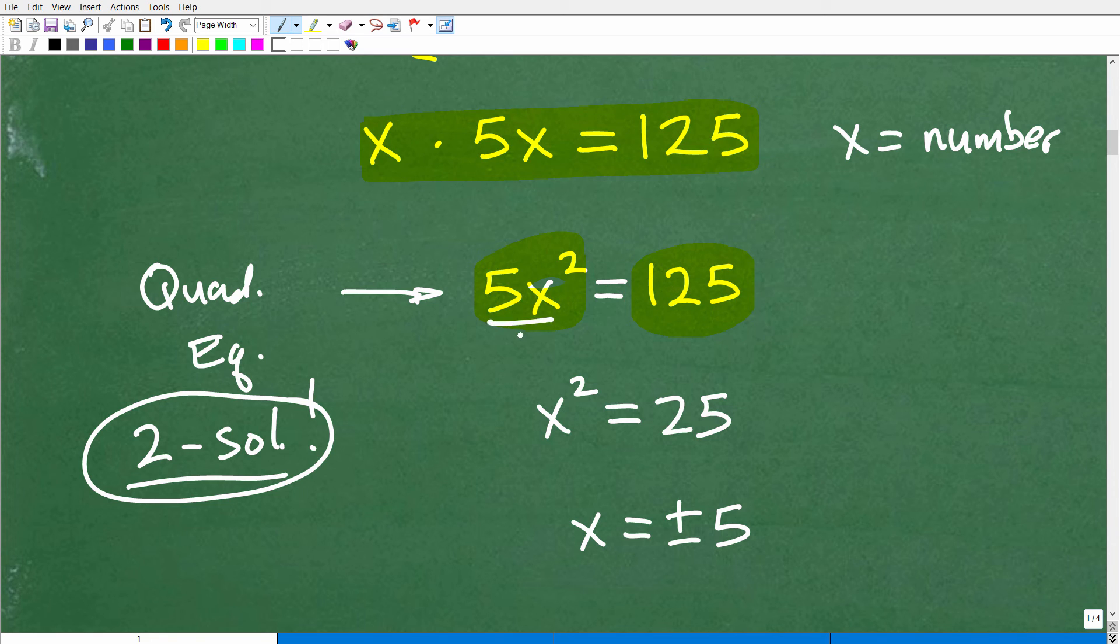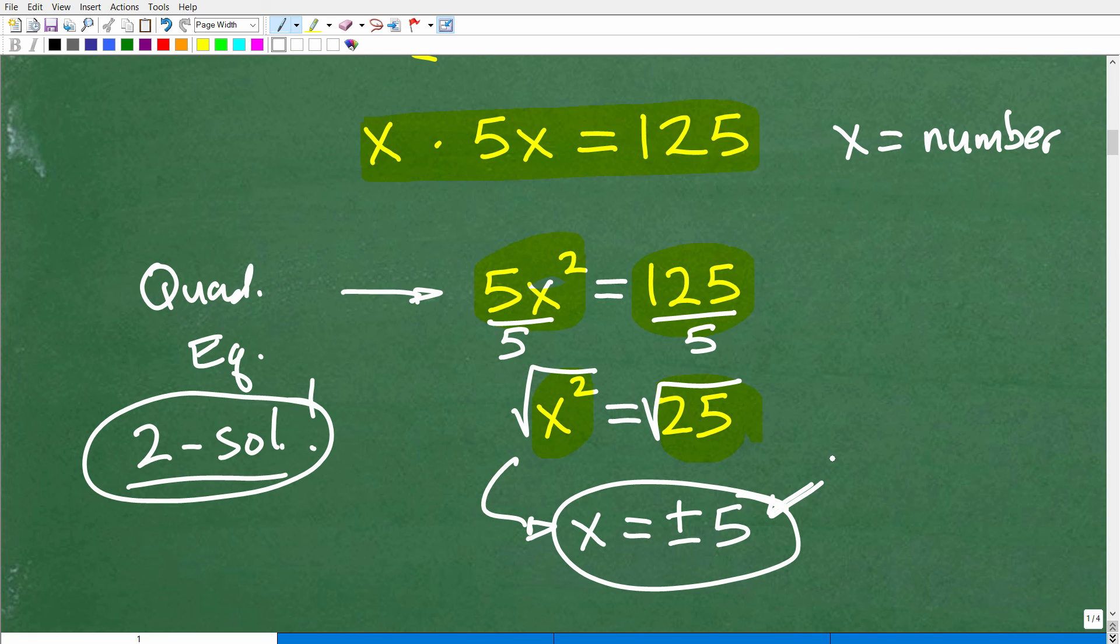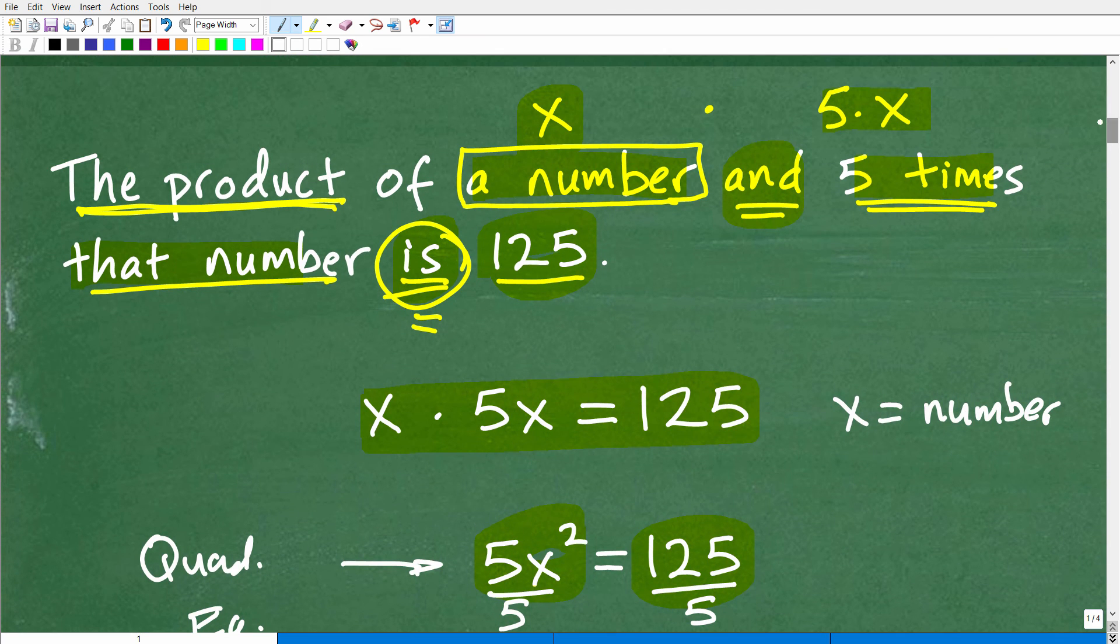So how do I solve this particular quadratic equation? Well, the easiest thing to do is to isolate that X squared. I'm going to go ahead and divide both sides of the equation by five. So 125 divided by five and five divided by five over here gives me X squared is equal to 25. Now I can simply just take the square root of both sides of the equation. So the square root of X squared is X and the square root of 25 is both a positive and negative five. So that's why we have two answers to this. Two answers and both positive five and negative five would work in terms of satisfying this particular problem. The product of a number and five times that number is 125.